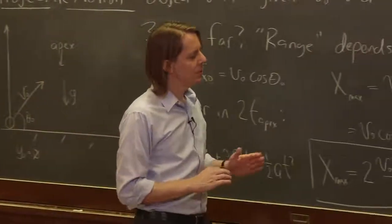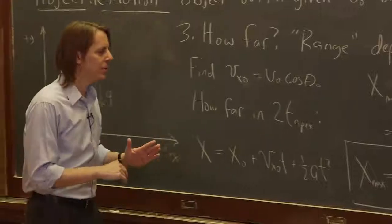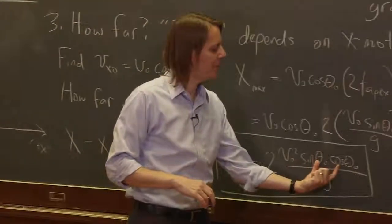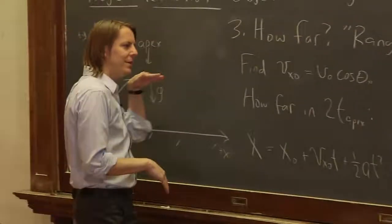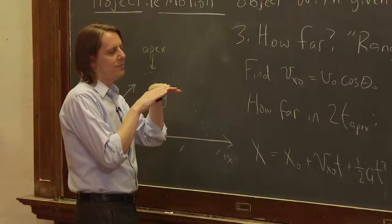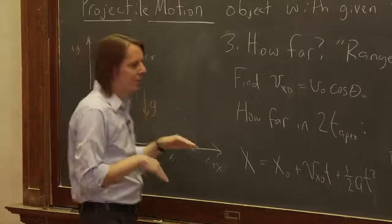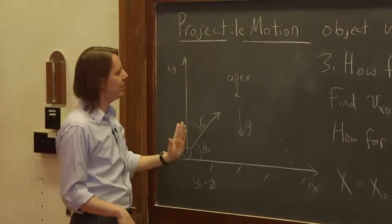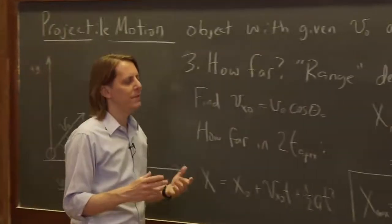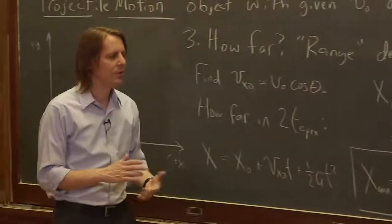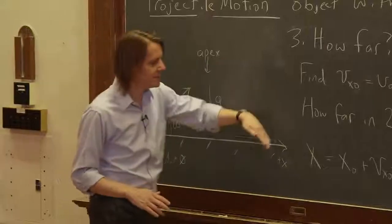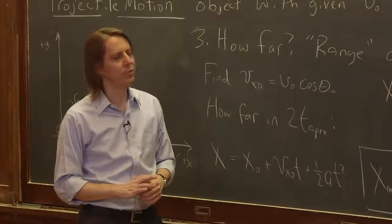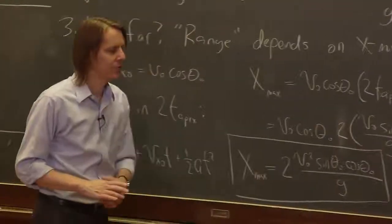This formula also tells you when you get the longest range. If firing at a constant velocity but changing angle, the answer is in the sine theta naught cosine theta naught term. Shoot at a very small angle and sine of a small number is very small — sine of zero is zero. Shoot straight up at 90 degrees and cosine of 90 is zero. So you need to find where sine theta cosine theta is maximum, and the answer is at 45 degrees. You can also use the trig substitution sine of two theta to combine those, but the key result is that 45 degrees gives the maximum range.